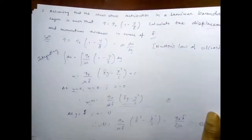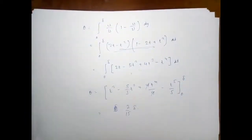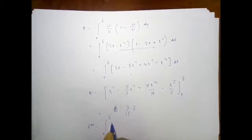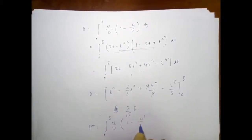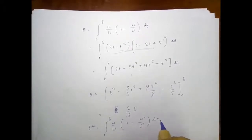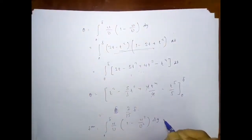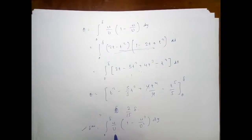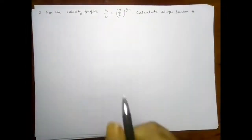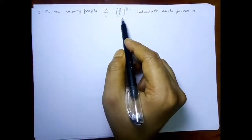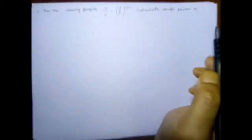If the question also had energy thickness, we could use δ** = ∫₀^δ (u/U)(1 − u²/U²) dy. Next question: for the velocity profile u/U = (y/δ)^(1/7), calculate the shape factor H.